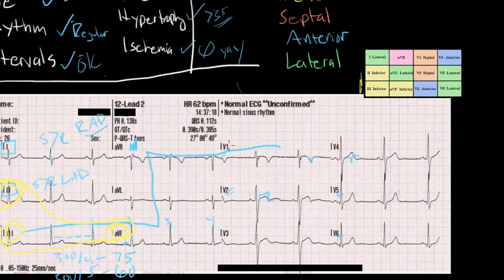Next, my septal leads are pretty easy, V1 and V2 are usually my septal leads, and my anterior leads are V3 and V4. Some people include V2 in their anterior leads, but this is V3 to V4 is roughly your anterior leads, and finally your lateral leads are V5 and V6, and they also include V1 and AVL.